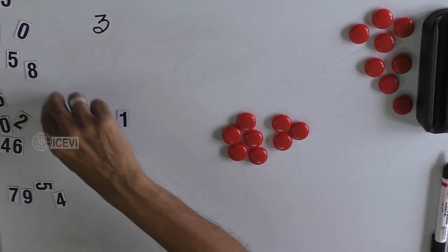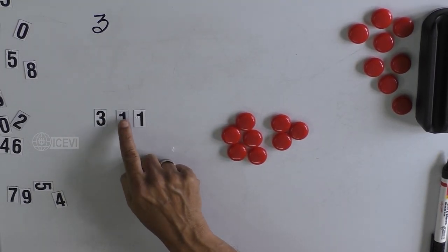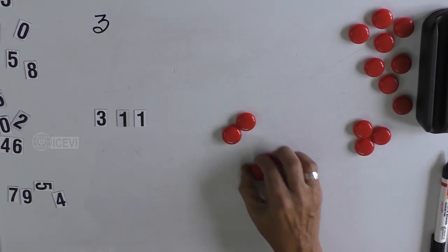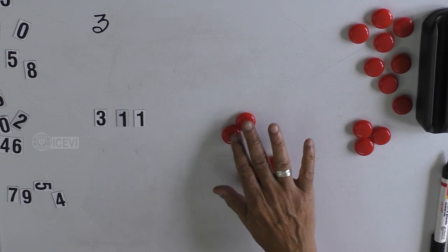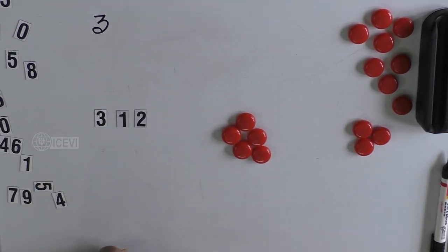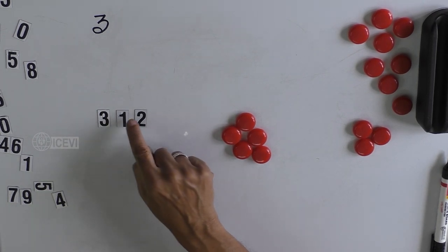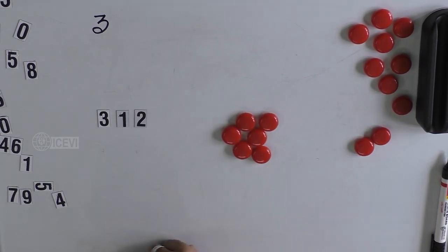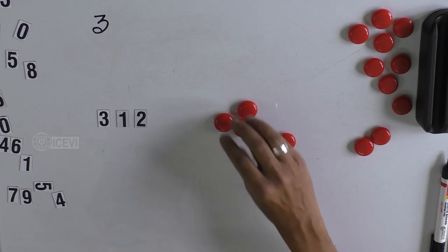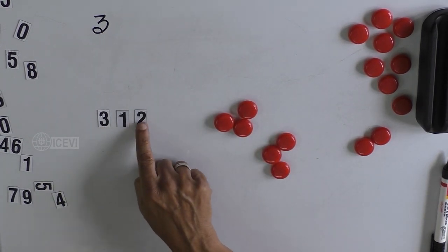Let us take 131. Now 3 plus 1 is 4, 4 plus 1 is 5. Since 5 is not divisible by 3, you get 2 as a remainder. Let us take 312. The digits: 3 plus 1 is 4, 4 plus 2 is 6. Now 6 is divisible by 3 — 2 times. That means 312 is divisible by 3.